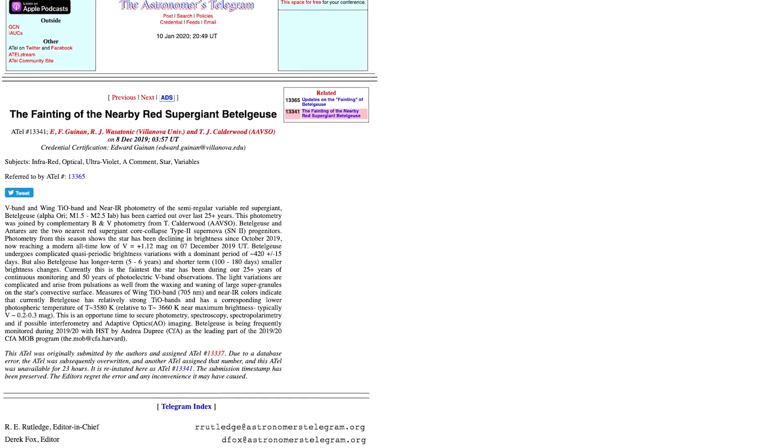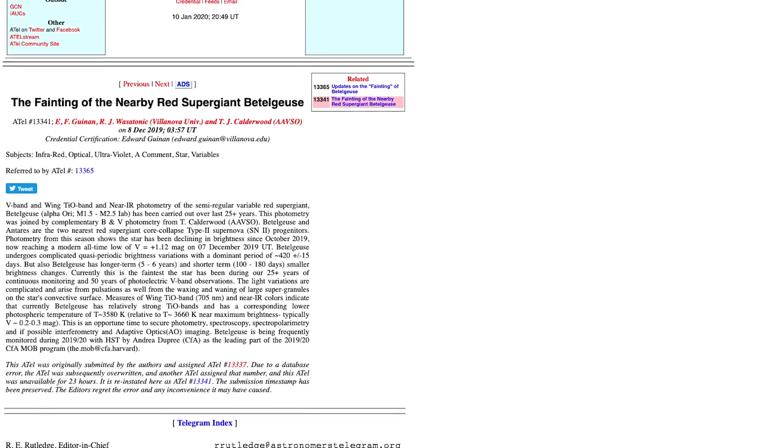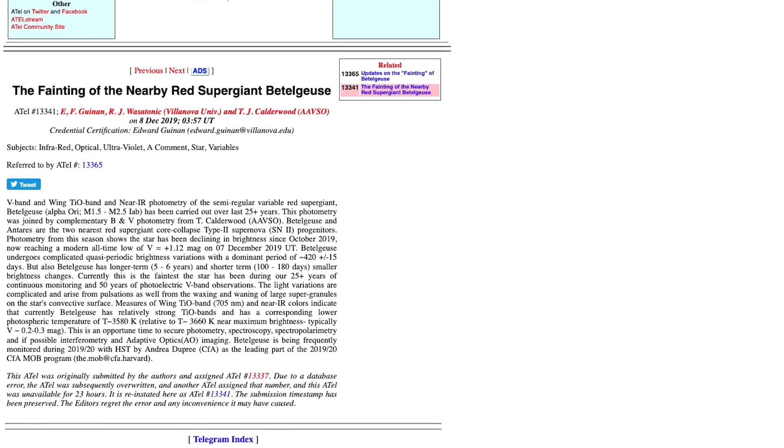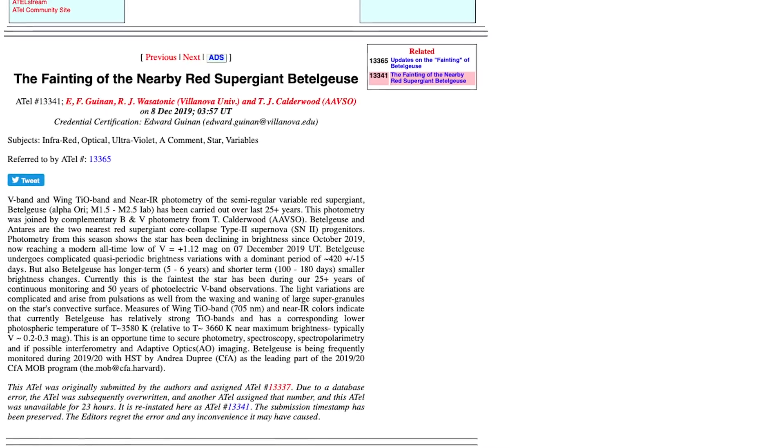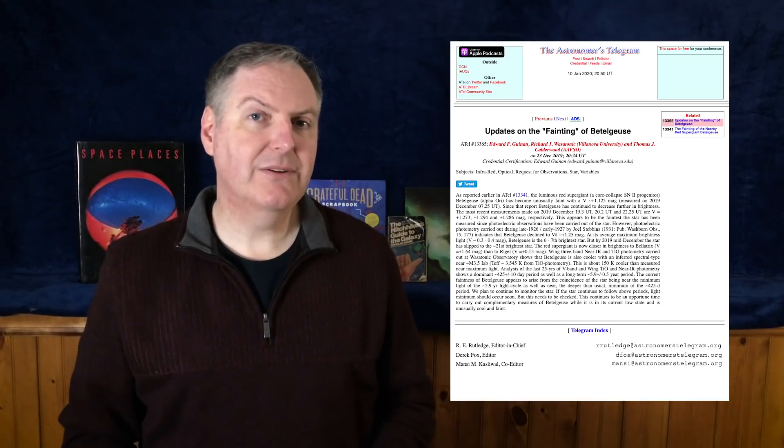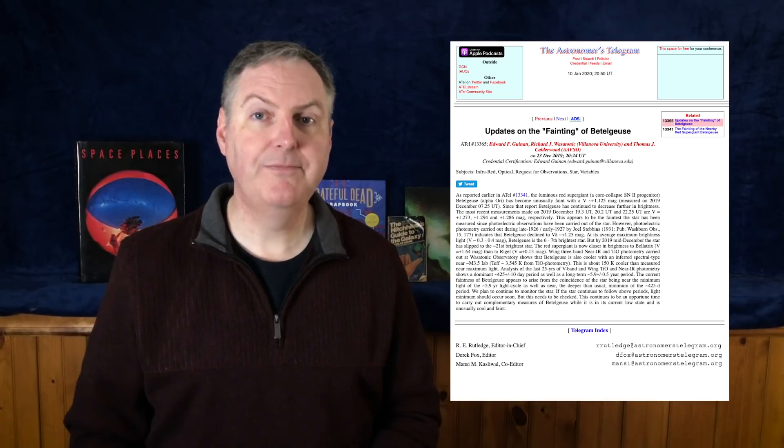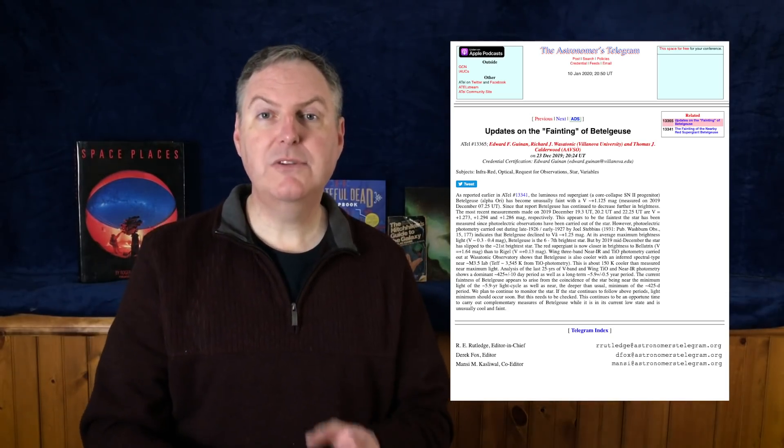On December 8, 2019, Ed Guinan from Villanova University sent an astronomical telegram stating that Betelgeuse had faded to magnitude 1.12. That, at the time, was a record low. But then, on December 23rd, Guinan sent another telegram stating that Betelgeuse had dropped to magnitude 1.3. And as of this filming, it's dropped even more, all the way down to about magnitude 1.5.